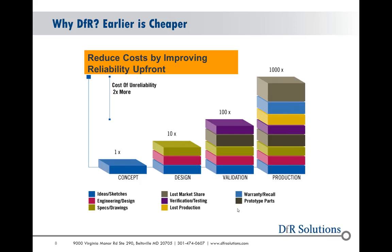Another way to look at it is the cost of failures — the cost of unreliability. A failure at concept stage is relatively cheap to fix, just a quick design change. Once you're in the design stage, it's a little bit more. Maybe you're starting to get some tooling built and have to change things. Validation and production are obviously much more expensive to fix — you may have machinery that might have to change, or you may have to redesign the whole product or change components.